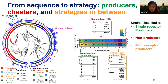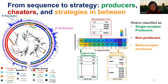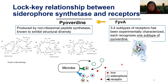Multi-receptor producers synthesize one siderophore — they have one synthetase gene — but they have multiple copies of receptors in their genomes. Why do they need more than one receptor? Because bacteria have compact genomes and don't keep things they don't use. Probably because there are multiple types of pyoverdine and multiple types of receptors.